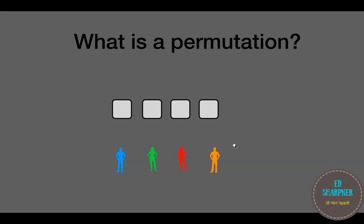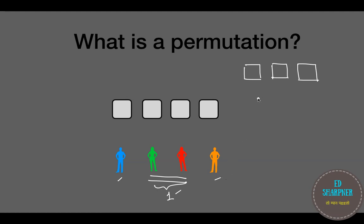Examiners do a lot of variations in such problems. A common variation is: if these two women wish to stand together always in a line, we consider only three spaces because the two women are treated as one unit. So how many ways can we arrange three people? Three factorial. But these two women can stand interchangeably — green ahead of red, or red ahead of green — so internally they arrange themselves in two factorial ways. We multiply, giving three factorial times two factorial.